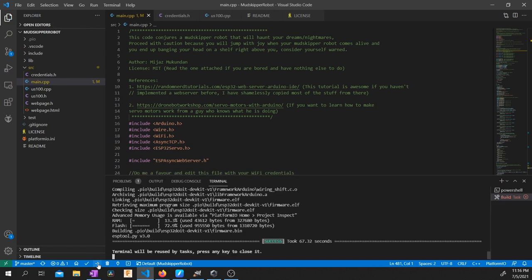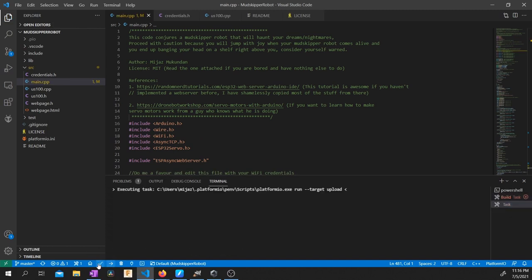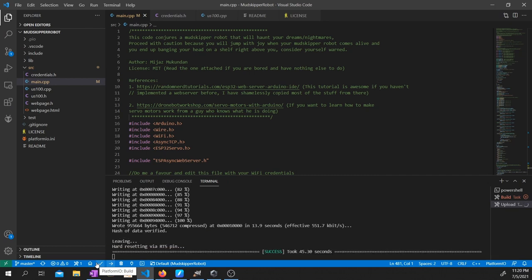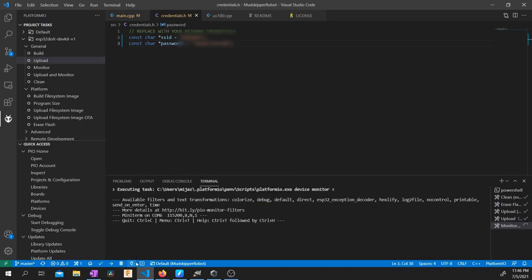Now it's time to upload the code. There, it's done. Now open the serial monitor and note down this IP address.